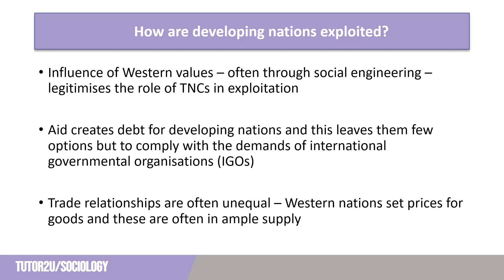A final way in which developing nations are exploited according to Dependency theorists is through unequal trade relationships. Many developing nations produce low value primary goods, and often many other nations produce the same goods. This enables Western nations to set the price for these goods and leaves developing nations unable to make enough profit to progress. While modernisation theory suggests that trade is a key motor in development, Dependency theorists see it as a force of exploitation.